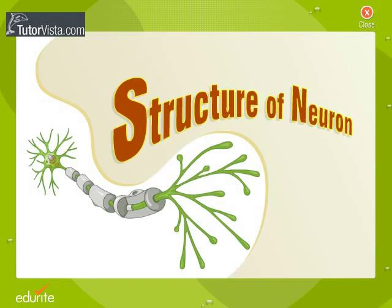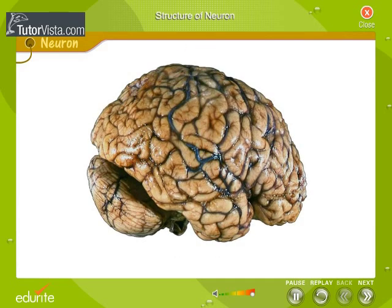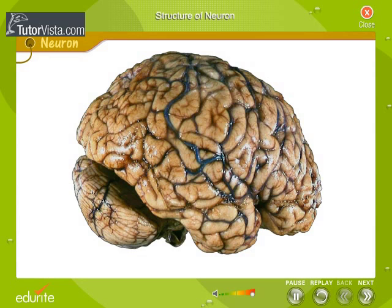The human body is made up of trillions of cells. Cells of the nervous system, called nerve cells or neurons, are specialized to carry messages through an electrochemical process. The human brain has about one hundred billion neurons.